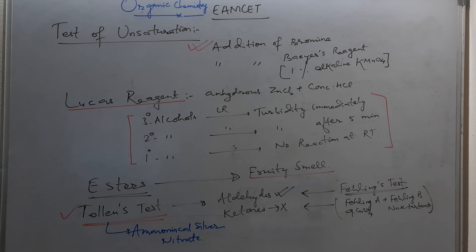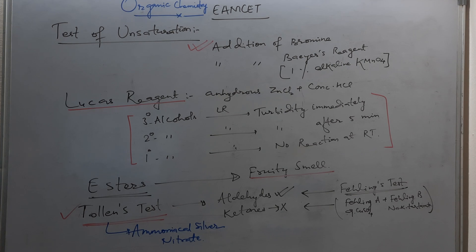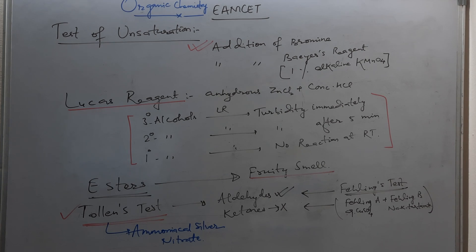Victor Meyer test is used to distinguish between primary, secondary, and tertiary alcohols. Remember the trick RBC 1-2-3: primary alcohol gives red-blood coloration, secondary alcohol gives blue coloration, and tertiary alcohol does not react — giving a colorless result.